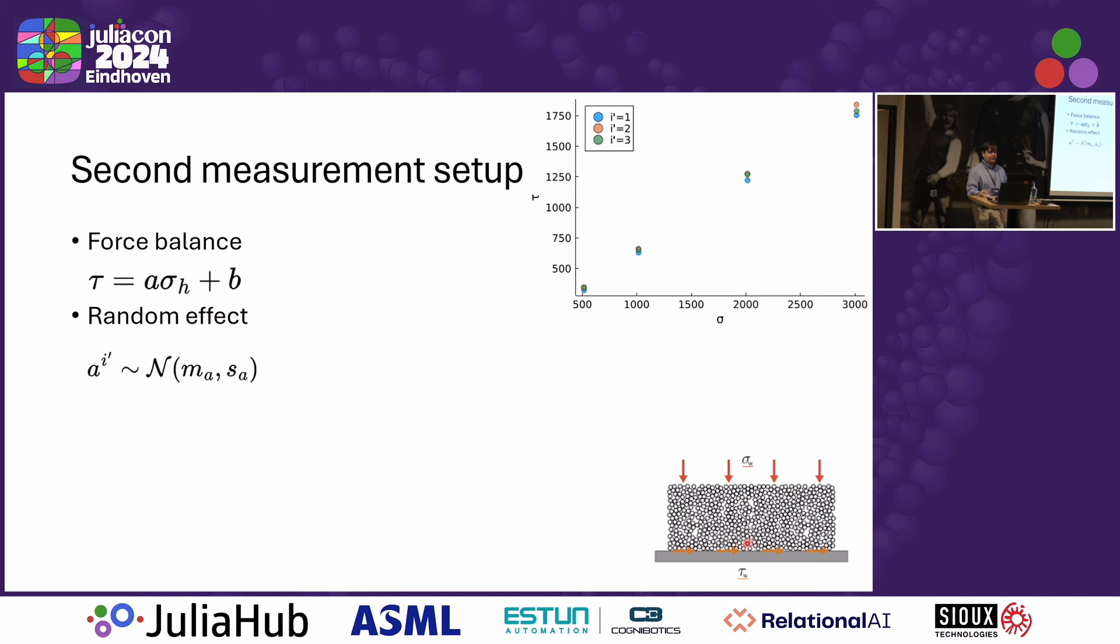What we see here is that we now apply a force to the powder. Then what we measure is the friction force on the wall of the silo. As you push harder on the powder, of course, the amount of friction also goes up.